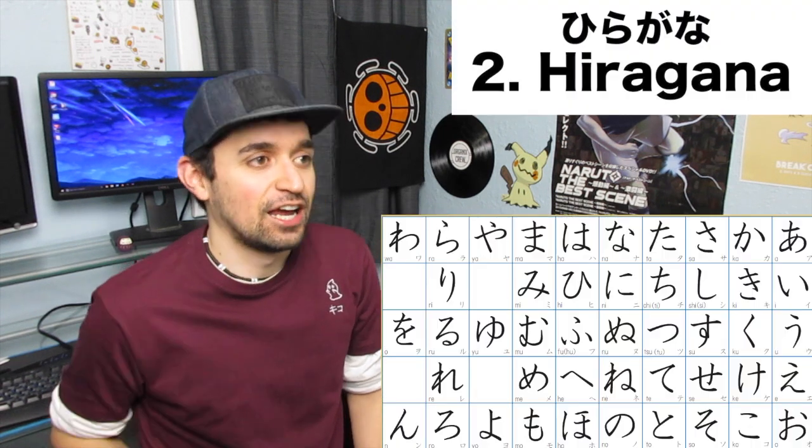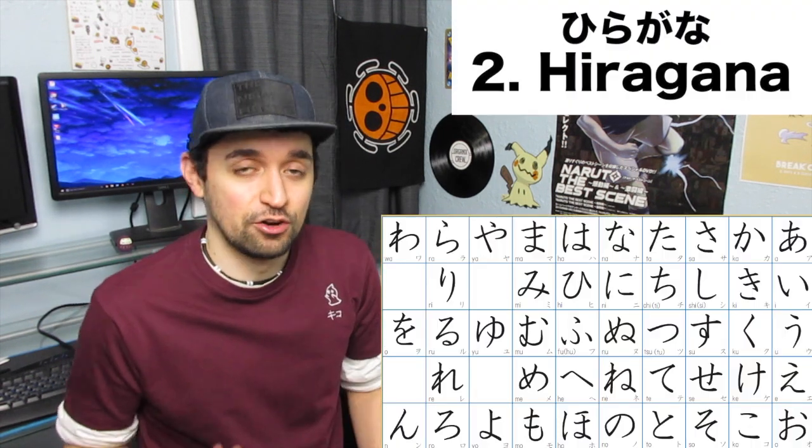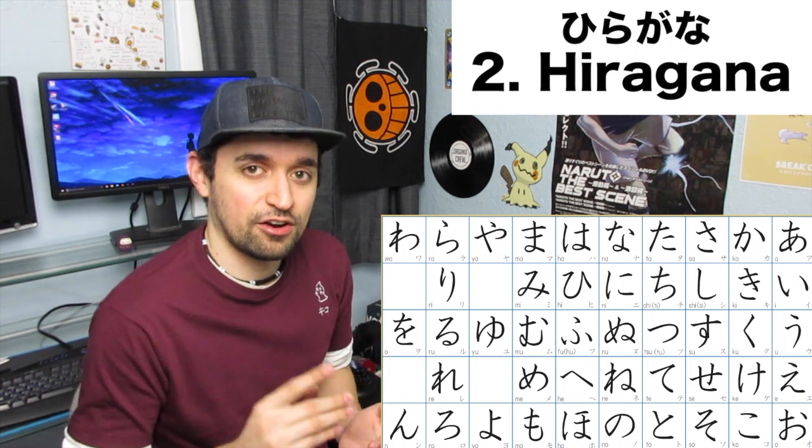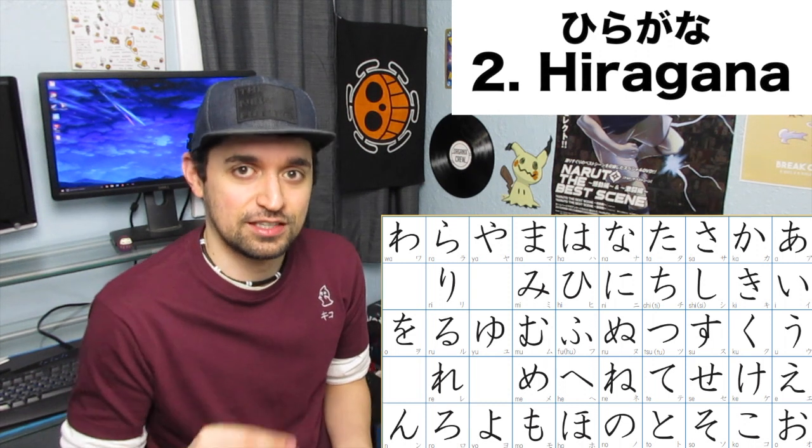The second type is hiragana. Hiragana is the actual Japanese alphabet — there are 46 characters total and they all end with a vowel, except for the letter N. Hiragana is used for Japanese words that originate from Japan and for Japanese people's names. Hiragana can also be written in kanji to be made easier to read, and Japanese people can also write their names in kanji. Just know that hiragana is the basic alphabet, used for Japanese words and Japanese people's names.